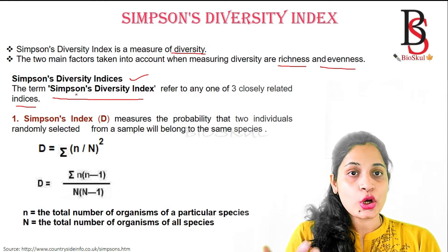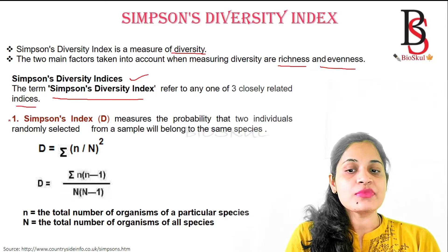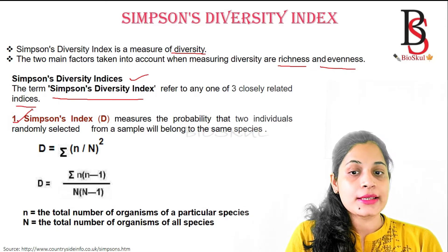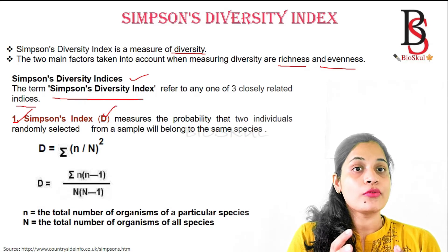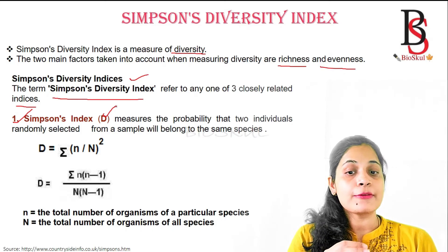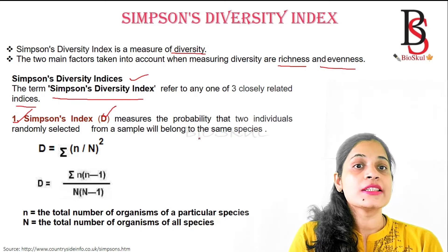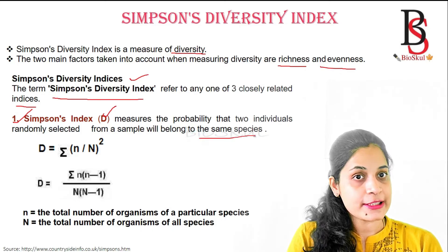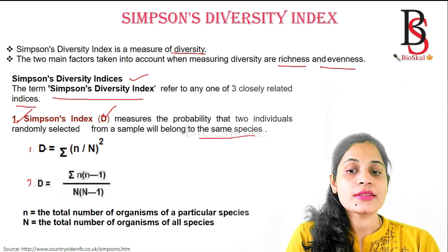The first one is the Simpson's Index, represented by capital letter D. It measures the probability that two individuals randomly selected from the sample will belong to the same species. The Simpson's Index is calculated by two formulas.